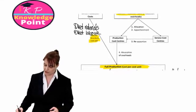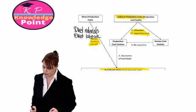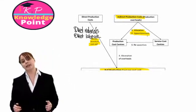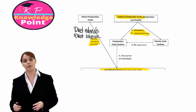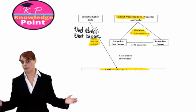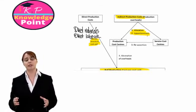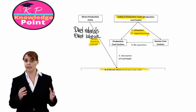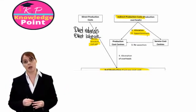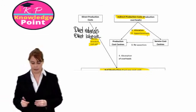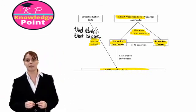We see that our first two steps are allocation and apportionment. So what we do is, we start at the top with our total production overhead cost for our factory. And in our first two steps, all we are doing is finding some fair way of dividing those costs across each of our cost centres. So we have our production cost centres and our service cost centres.